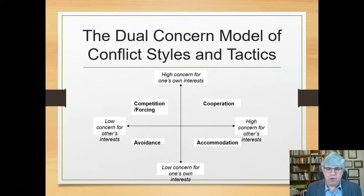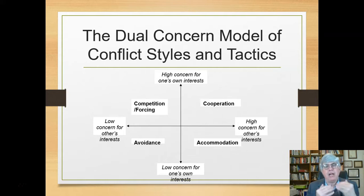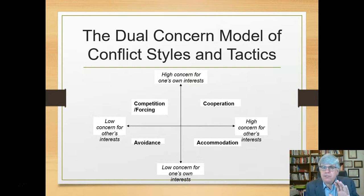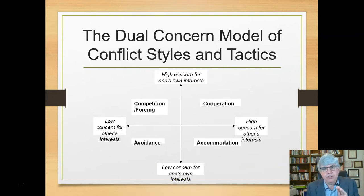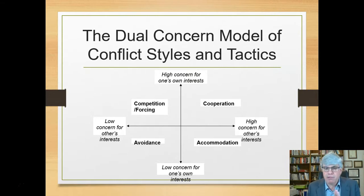The fourth quadrant is cooperation, where I'm concerned about what I want — I think what I want is important — but I also think what you want is important. Cooperation is where you say: let's try to find some solution that responds to everybody's interests and takes into consideration everybody's concerns, because they're both important. We're going to try to figure out something that will satisfy both of us. That's the quadrant called cooperation.